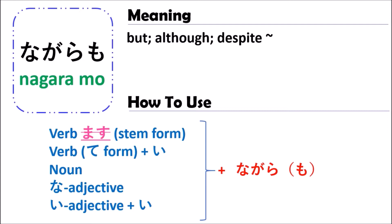For example, from ikimasu you get ite. Or kaite — something like this. After you change to the te-form, you follow by ite, then inangaramo — something like this.